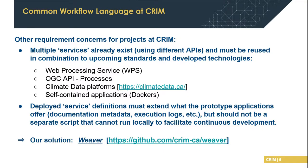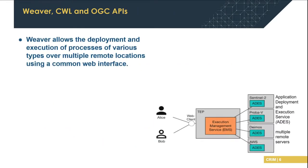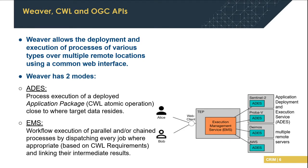To reach that goal, our solution was to develop Weaver, which is available on GitHub. Weaver allows the deployment and execution of processes of various types over multiple remote locations using a common web interface. It has two modes of operation: first, the ADES or Application Deployment and Execution Service, which executes an application package defined by CWL at the location where the data resides; and second, the EMS or Execution Management Service, which allows execution of processing workflows by dispatching jobs to appropriate ADES instances based on where the data resides and linking processing results between intermediate jobs.